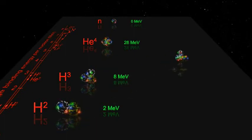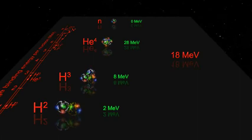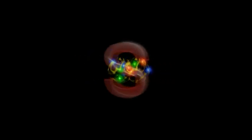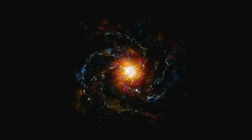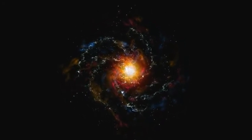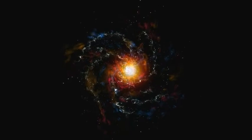But there's a problem. Getting the protons in the deuterium and the tritium close enough together so the nuclear force fuses them together is hard to do on Earth. This is the energy that powers the sun and the stars, but the sun's gravity holds the fuel in place while the high temperature gives the nuclei enough speed to overcome the electric repulsion.